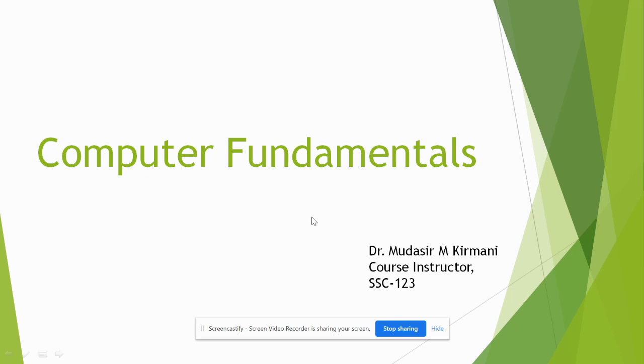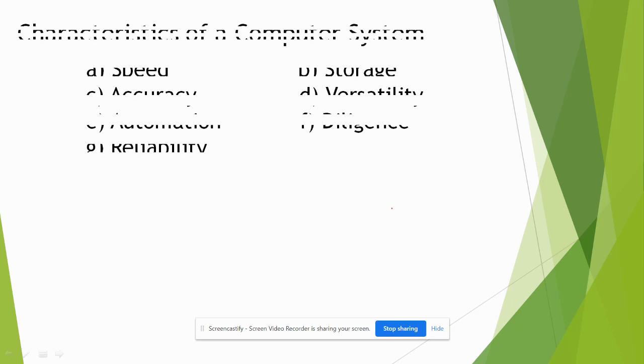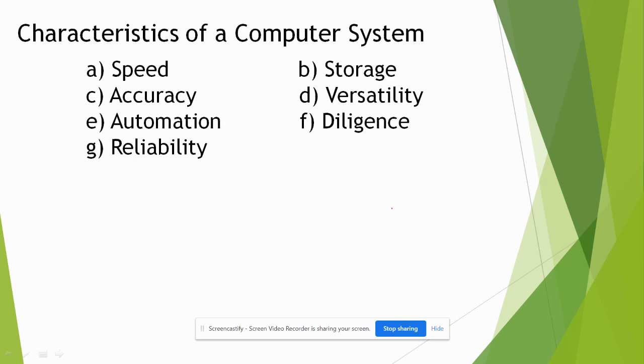I'll start today with the basic introduction about fundamentals of computers. There are certain characteristics of a computer system. When you compare the performance of a computer with a human being, as you might have studied, speed is one of the characteristics of a computer system. Accuracy is there because